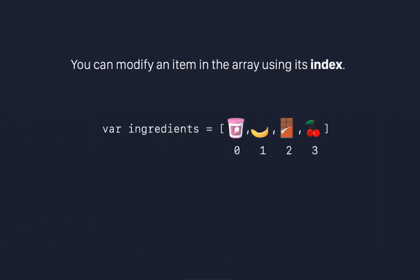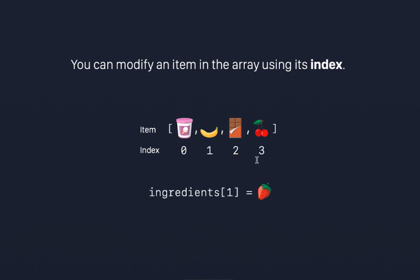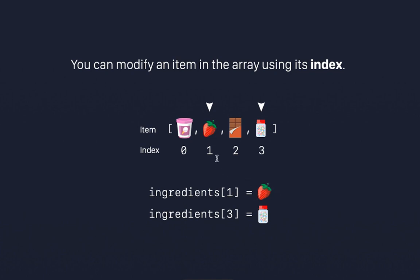By convention, all these ingredients start from index 0, 1, 2, and 3. If I want to replace the first ingredient, I say the array name, then give the index value, and then assign the new element. So for example, the element at index position 1 was banana and it got replaced with strawberry, and at index position 3 the value was replaced with sparkle. This is how we replace or modify a particular element in an array using the index.